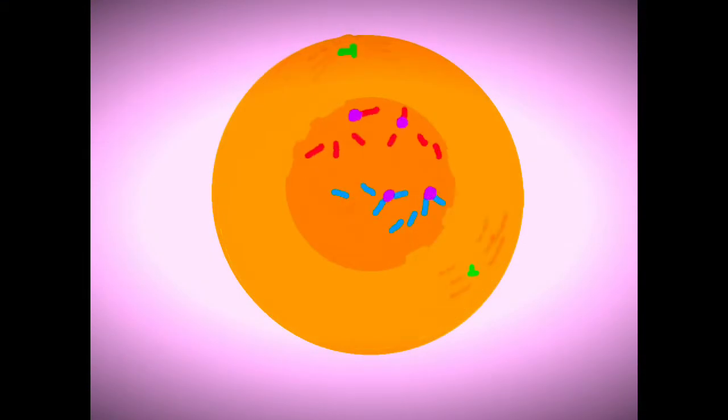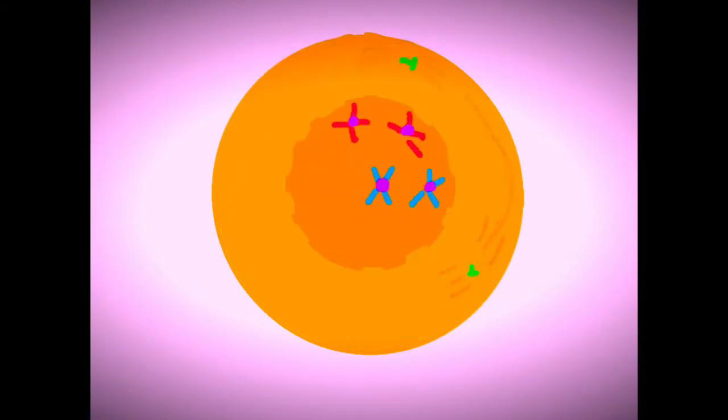In late prophase, the centrioles and asters are at opposite poles. The nucleolus and nuclear membrane have also disappeared. The double chromosome centrioles attached to the spindle fibers line up at mid-cell in metaphase.